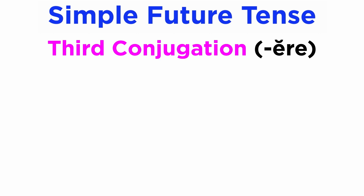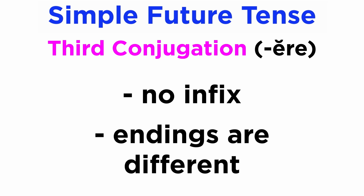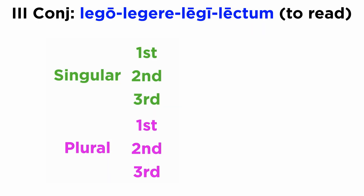In the third conjugation, unfortunately, the future tense is formed quite differently. In fact, no infix B is found, and the endings are also quite different. Let's take the verb lego, legere, legi, lectum, meaning 'to read,' as an example in order to observe the conjugation of the future tense.